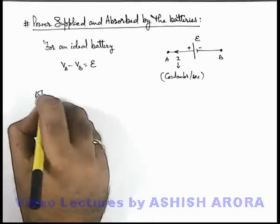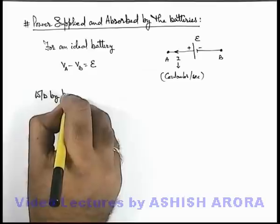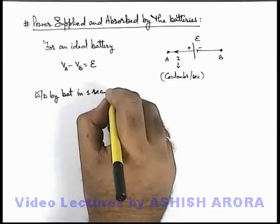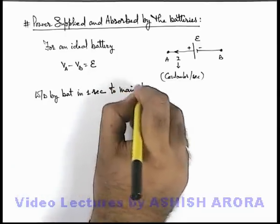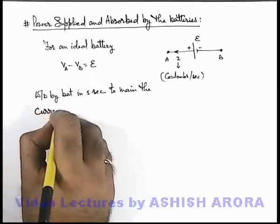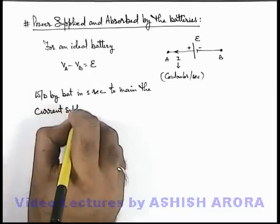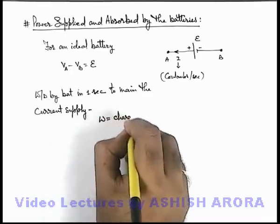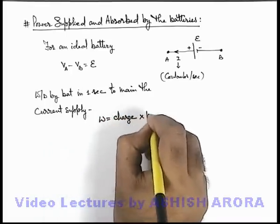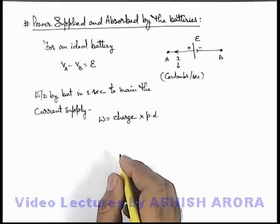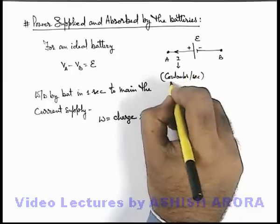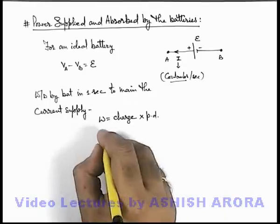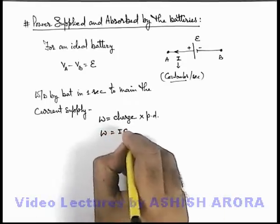Now in this situation, if we calculate the work done by the battery in one second to maintain the current supply, we can write this work done as the amount of charge that has flowed through the battery multiplied by the potential difference across the battery terminals. In one second, i amount of charge flows and the potential difference is E, so the work done equals i·E or E·i.